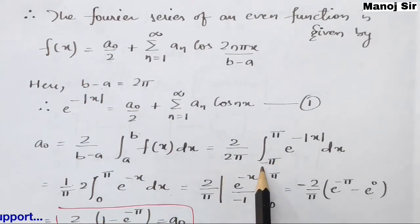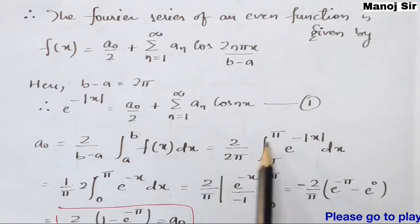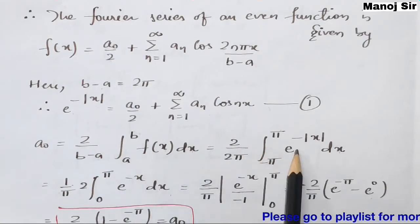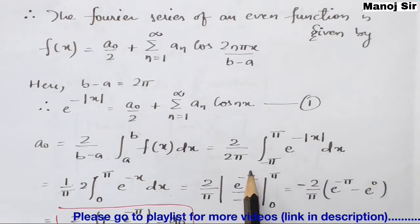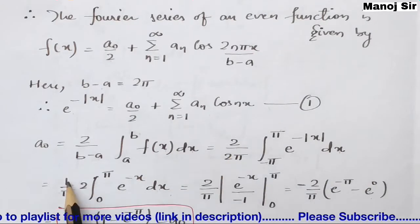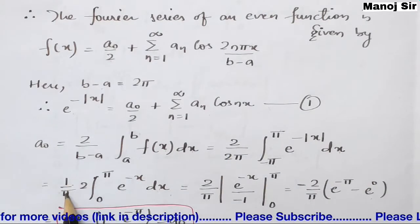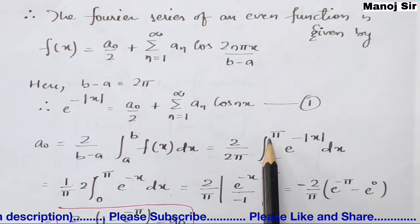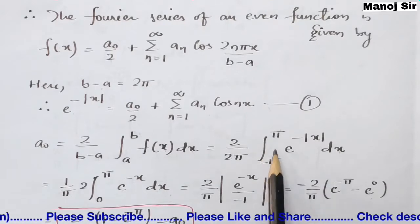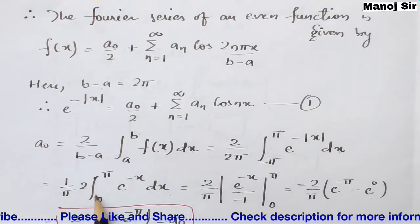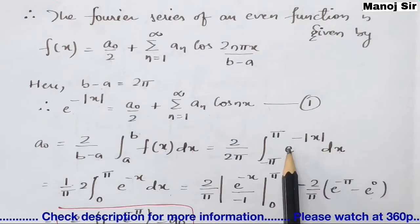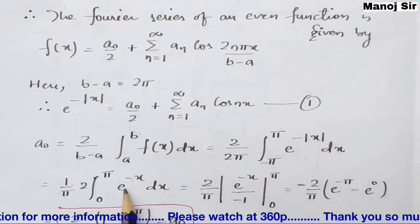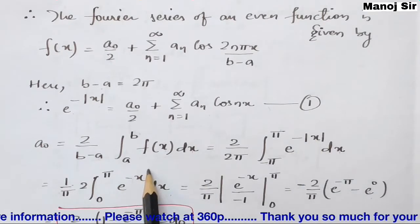So a₀ = (1/π) ∫(−π to π) e^(−|x|) dx. Now, the integration from −π to π can be written as 2 × ∫(0 to π), since the function is even. When the limit is 0 to π, e^(−|x|) becomes e^(−x).